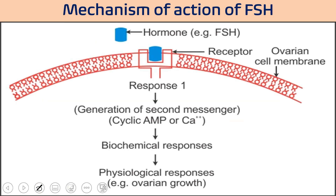Because FSH, LH, HCG, and TSH are peptide/protein hormones, they cannot cross the plasma membrane, so their receptors are located on the plasma membrane. The receptors for FSH, LH, TSH, and HCG are GPCRs — G protein-coupled receptors, also called seven transmembrane helix receptors. Once a hormone binds, it activates G protein which works through cyclic secondary messengers — either cyclic AMP or calcium ions — to induce different biological responses.